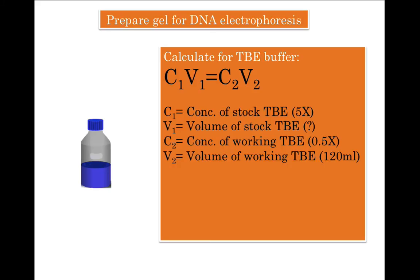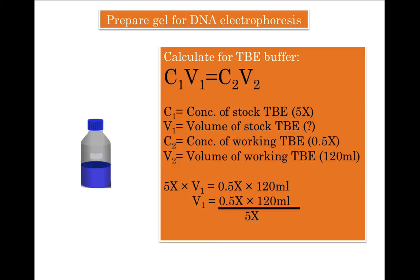Applying the formula C1V1 = C2V2: 5x × V1 = 0.5x × 120 ml. To find V1, we move 5x to the denominator on the right side: V1 = (0.5x × 120 ml) ÷ 5x, which gives us 12 ml.